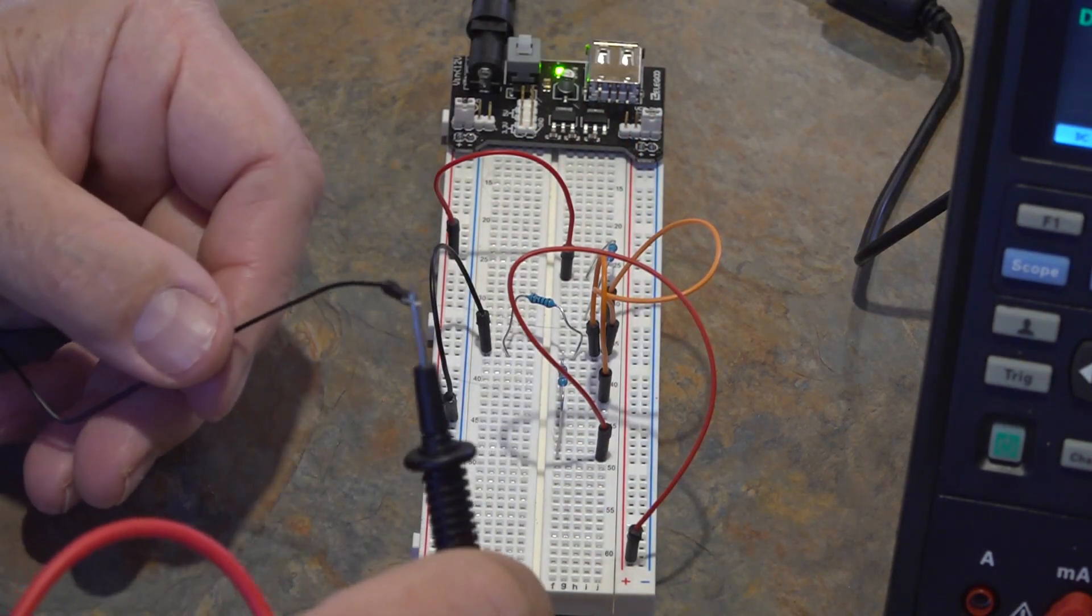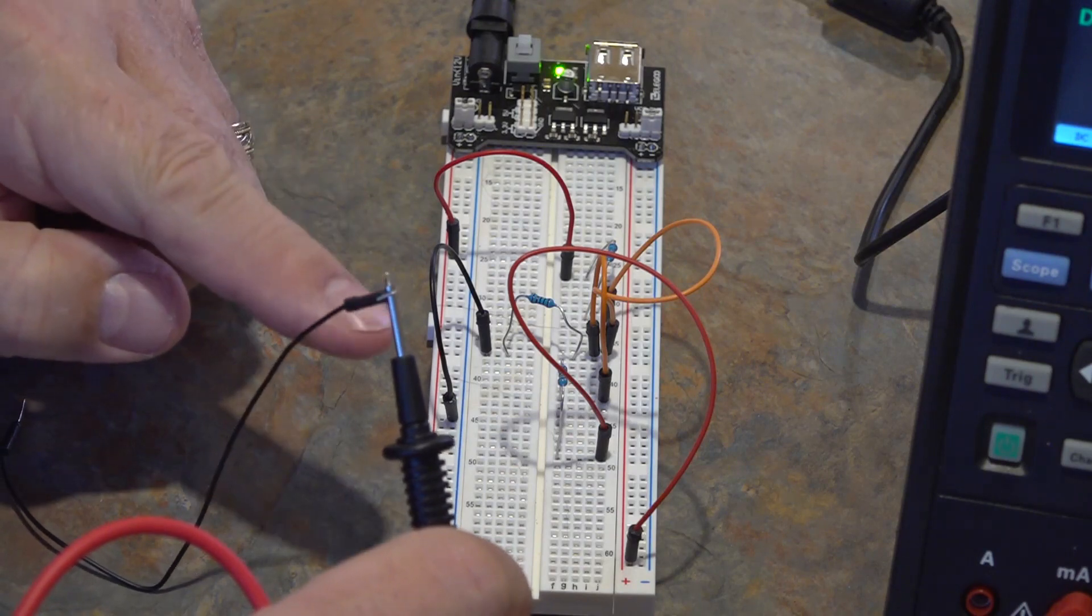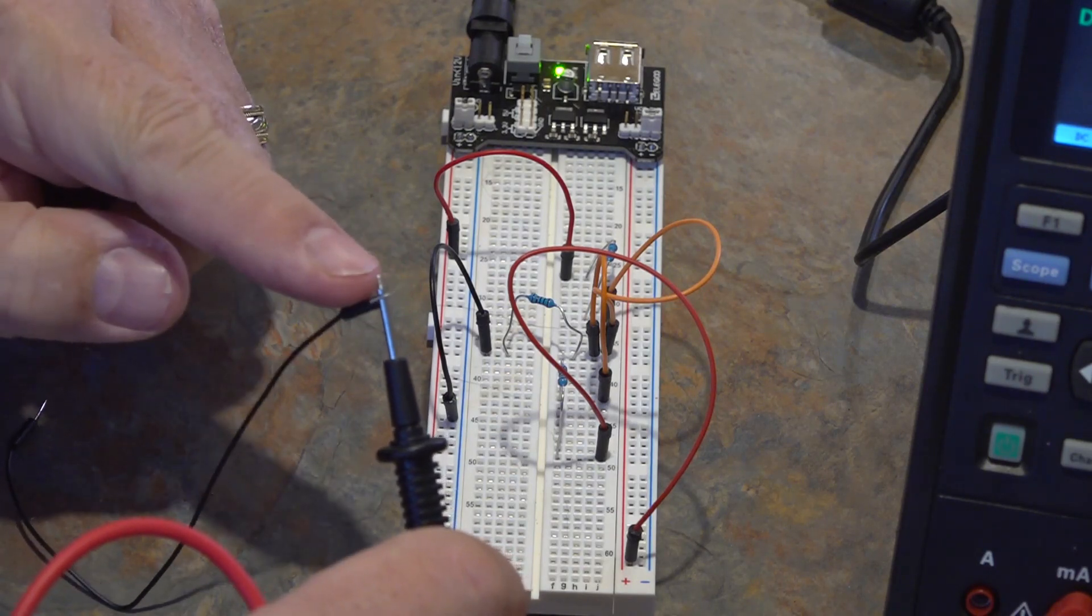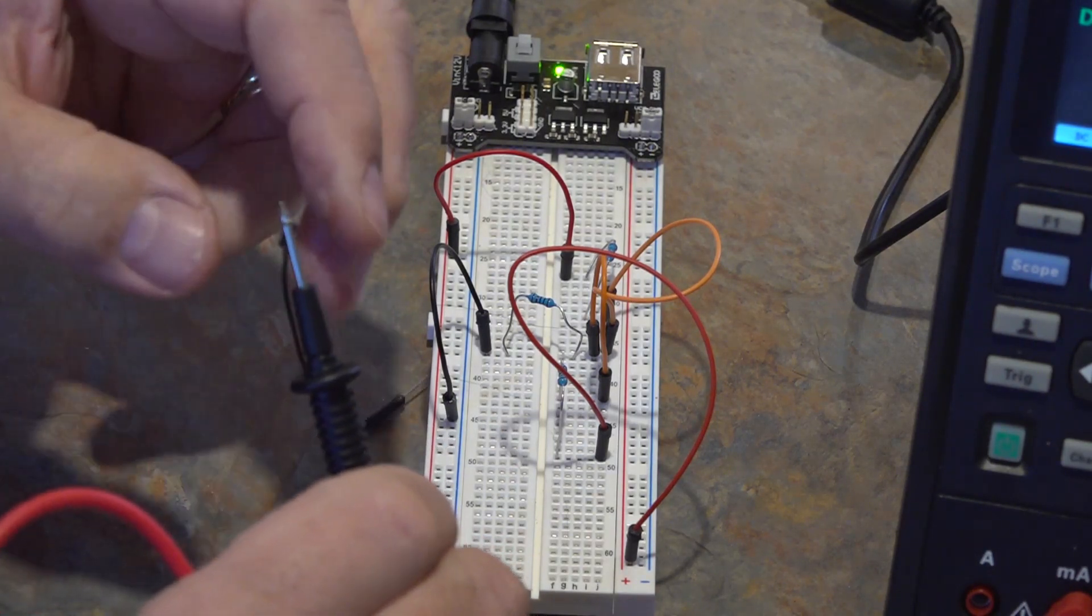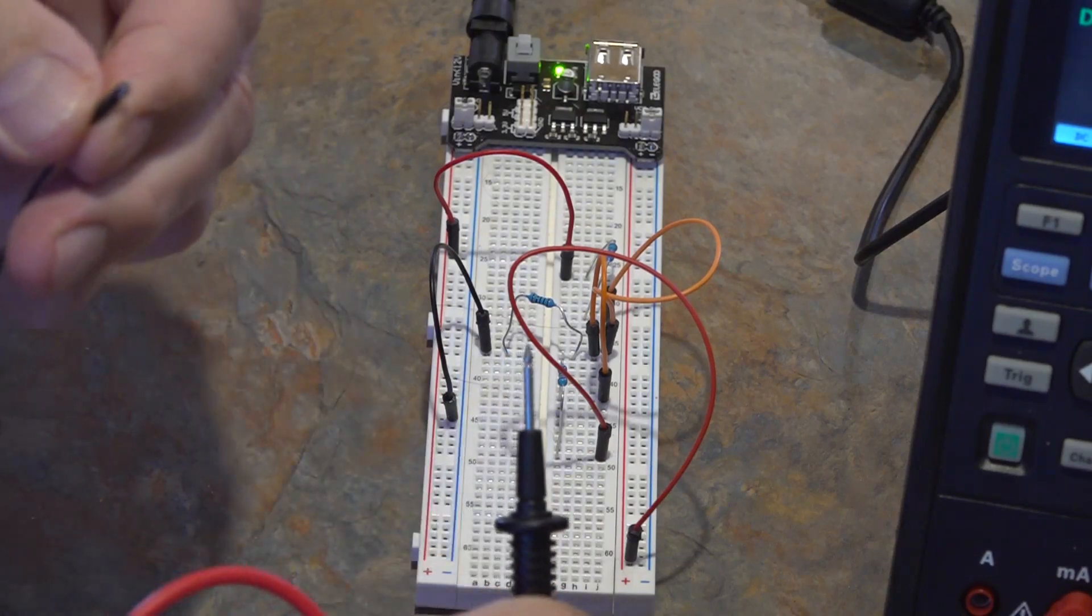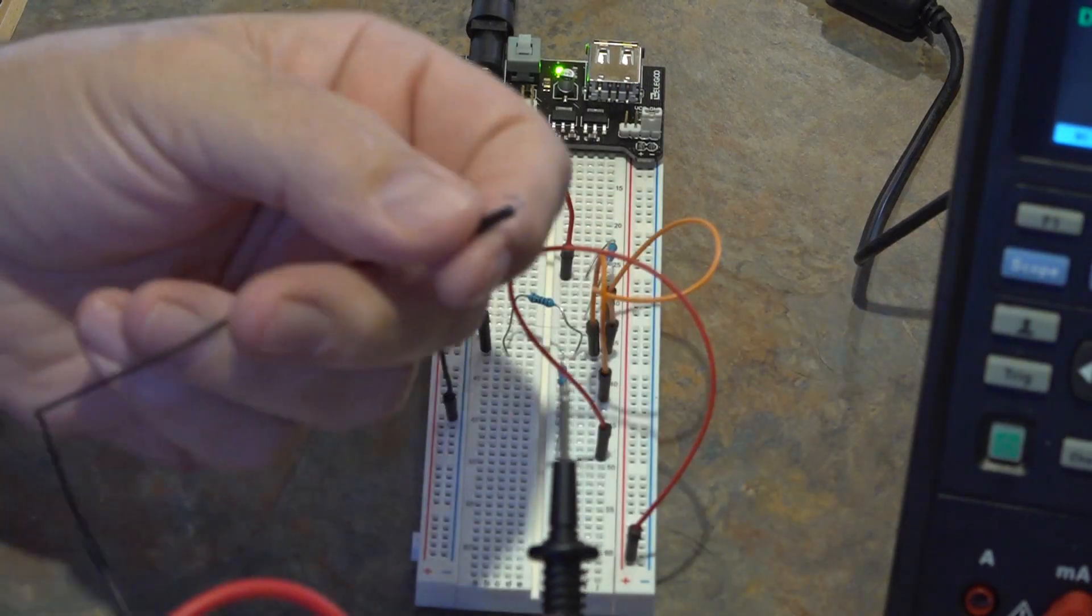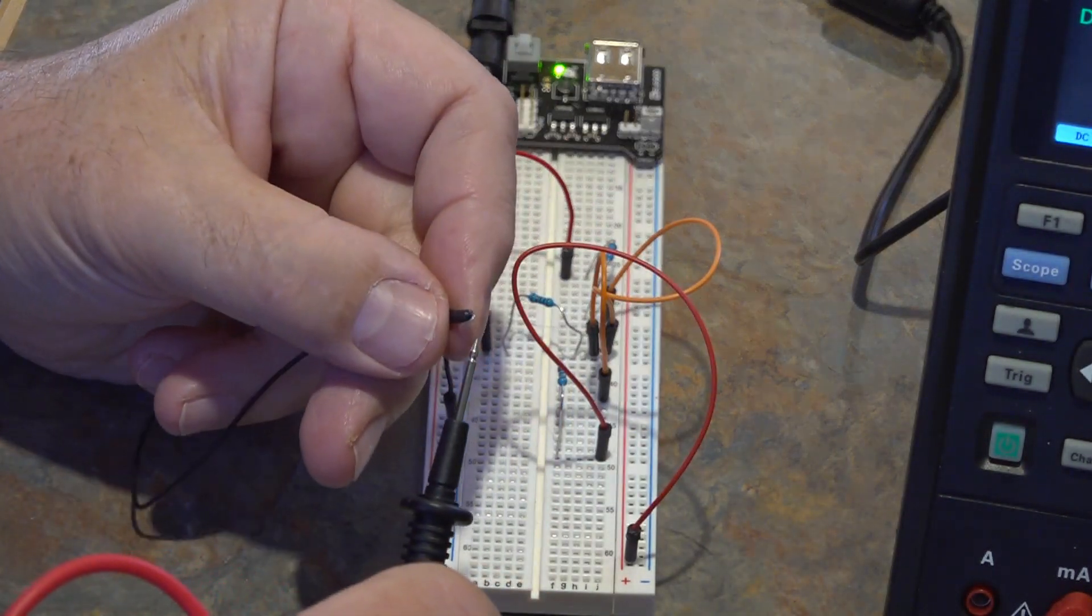And node C is the common. Now because I need two hands I took one of the jumpers and I bent it over so that it would snap onto the end of the probe on the negative side.